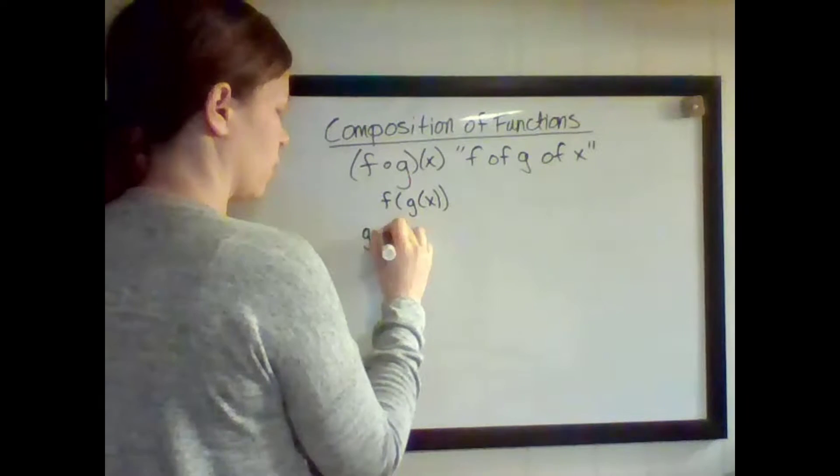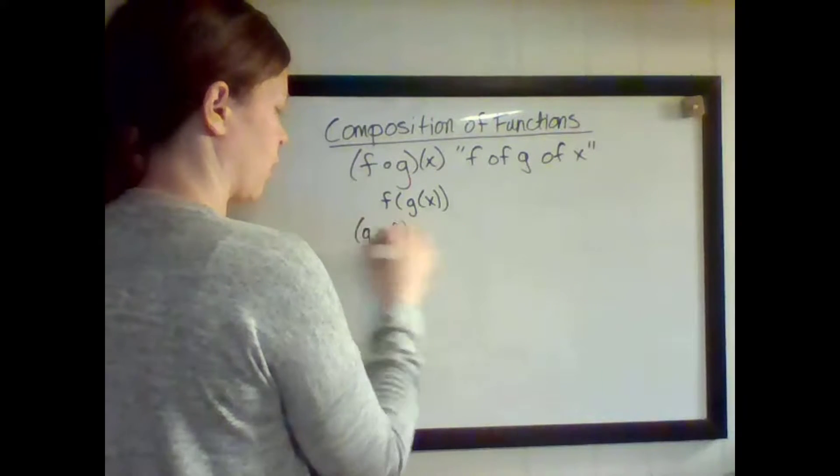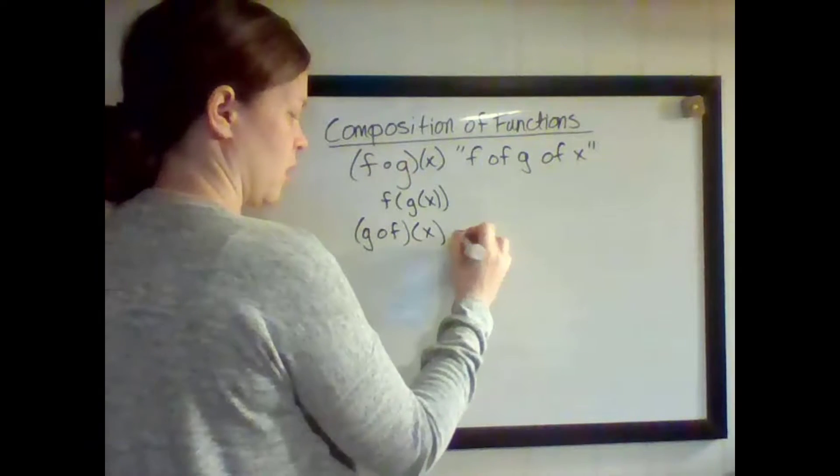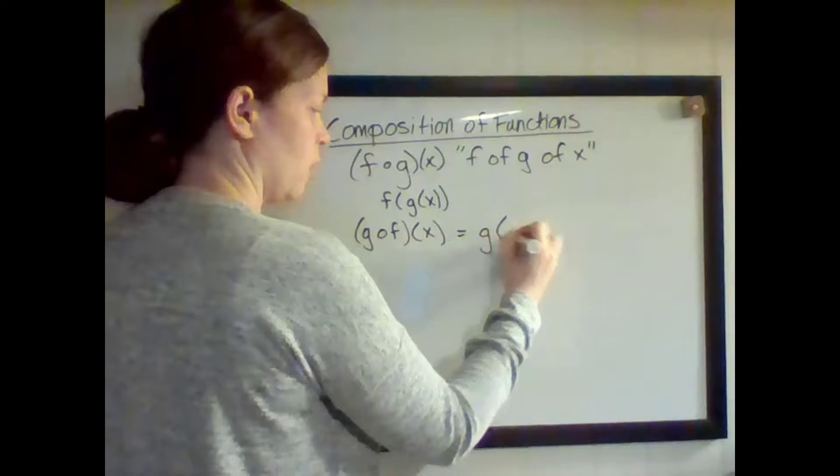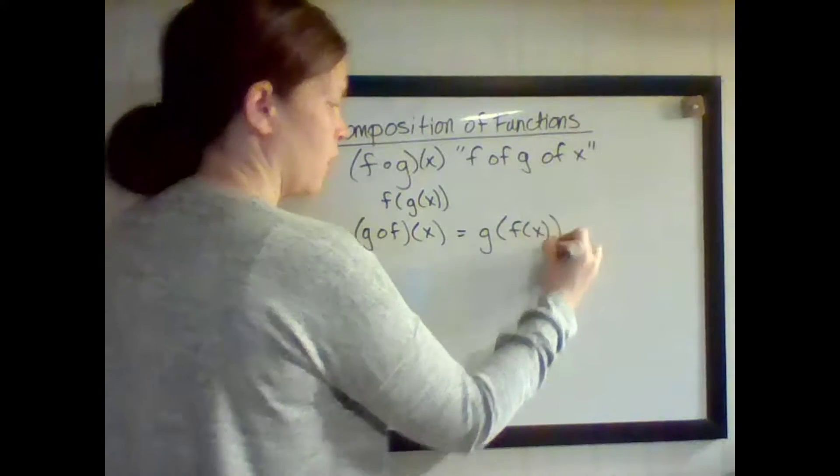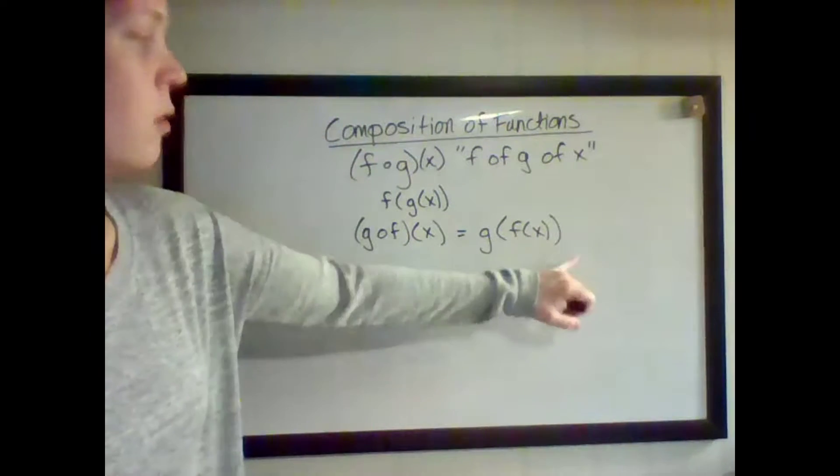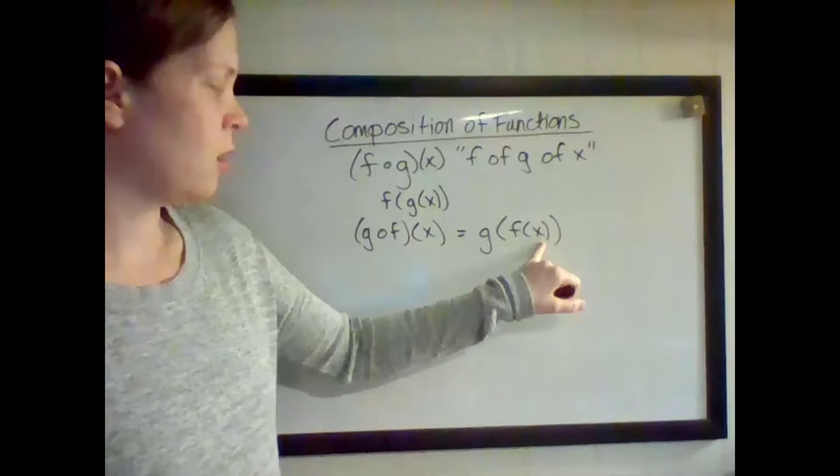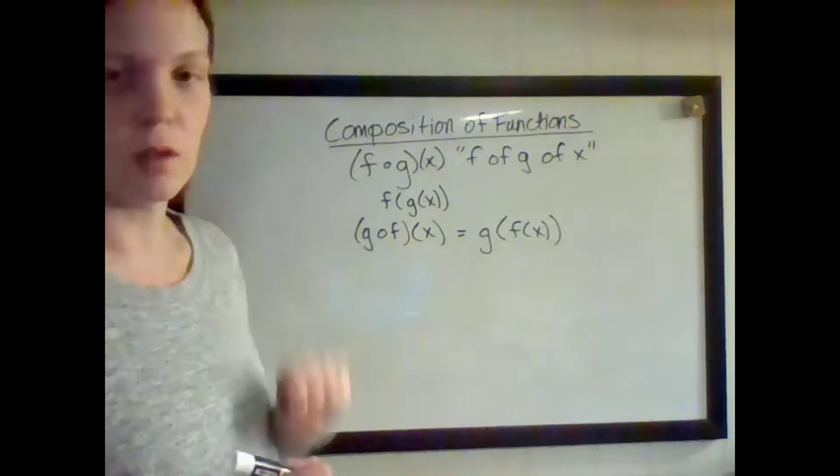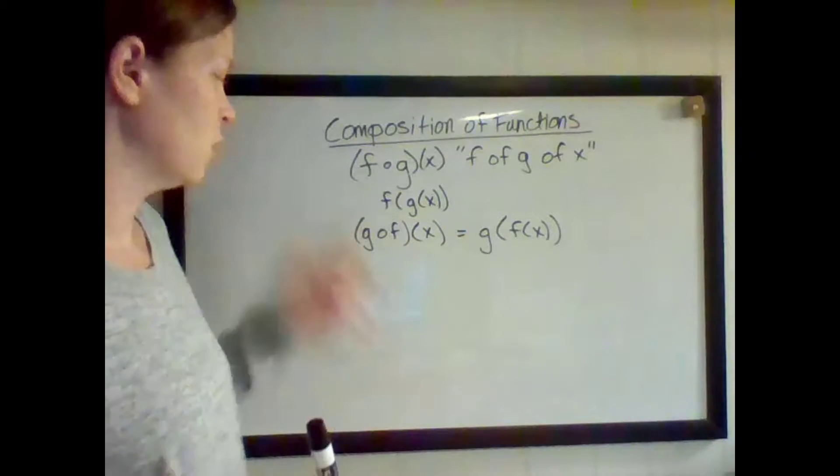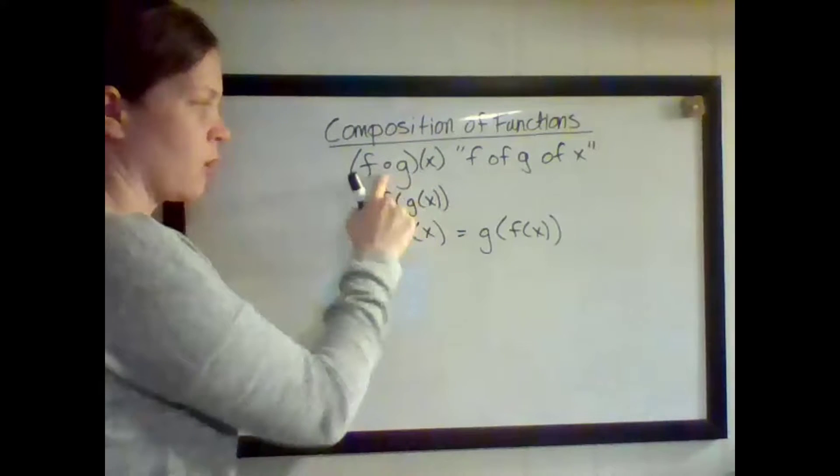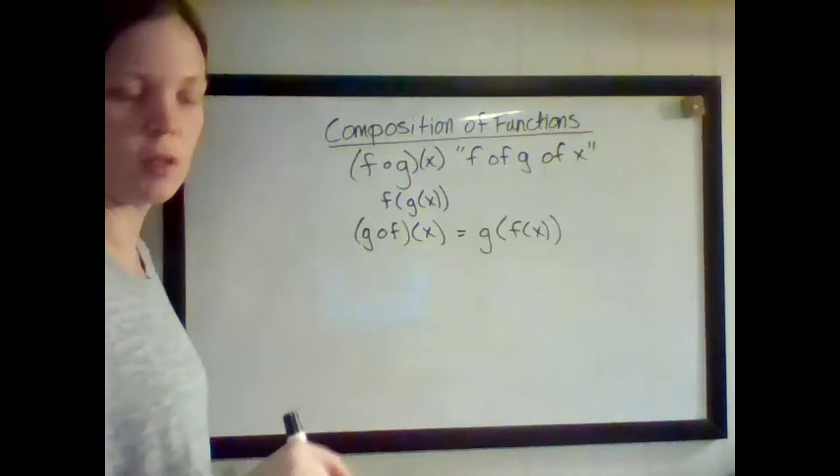Or if I have going the other way, a lot of times we go either way or use different variables. G of F of X is G, parenthesis, F, parenthesis, X. So this one, G of F, is meaning that F is going into the G function. So sometimes people say this is fogging, because it looks like an O. It's not an O. It's a little composition symbol.